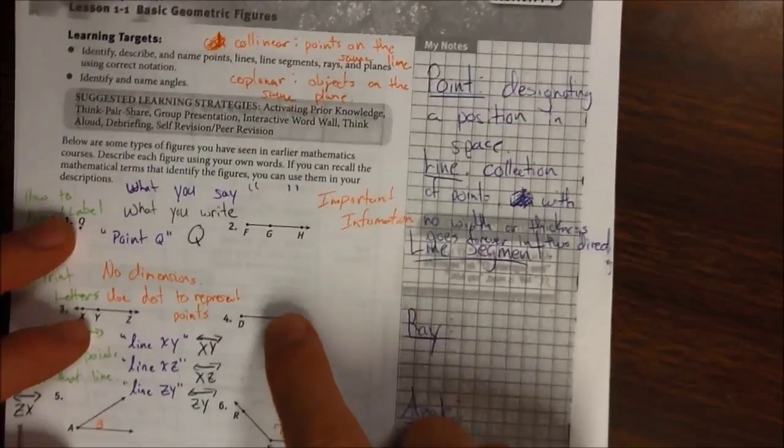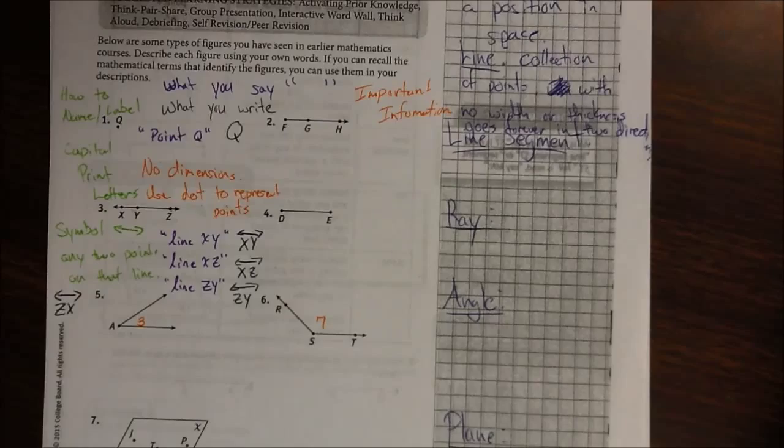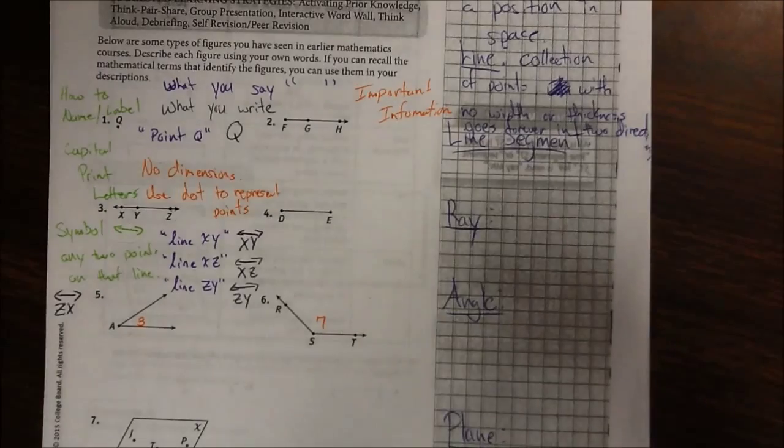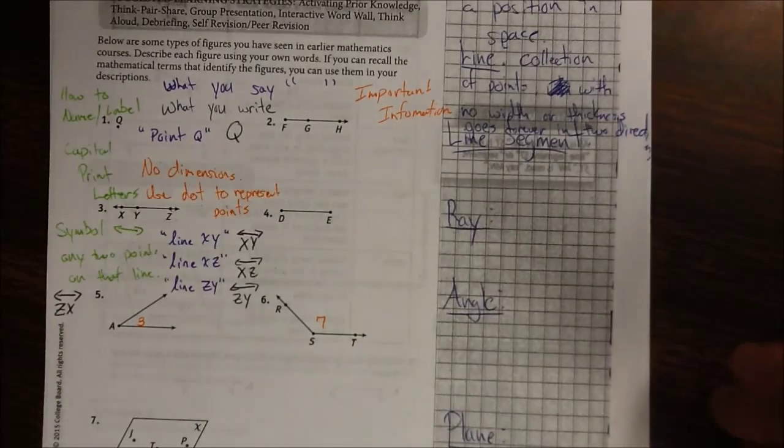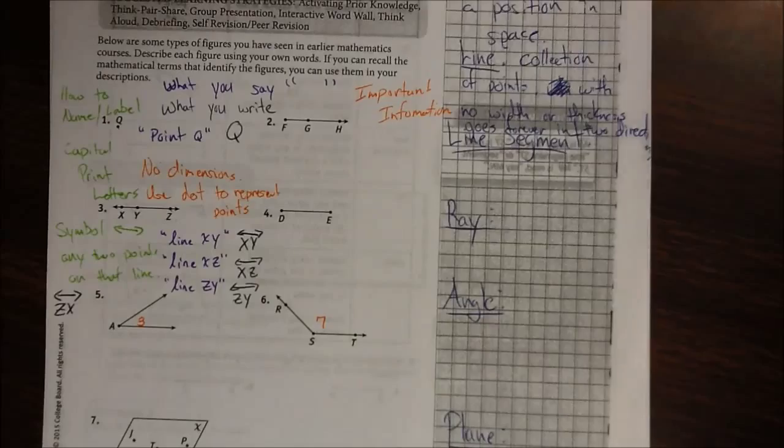We're going to move on to number four. I understand we still have skipped number two, but we'll go back to it. Number four, this here is a line segment. It's a piece, it's a part, it's a section, it's a segment of a line.